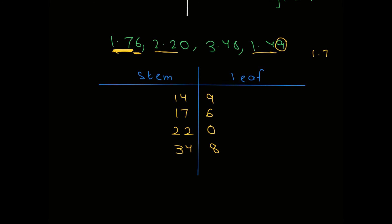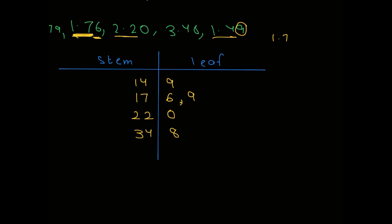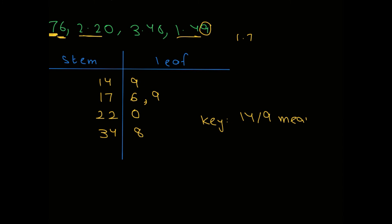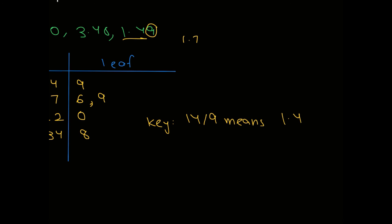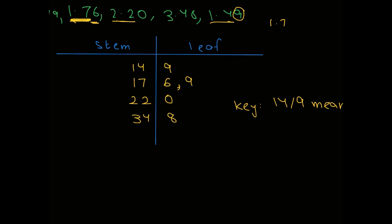If we also had 1.79, then alongside leaf 6 we would write 9 — so stem 17 would have leaves 6 and 9, representing 1.76 and 1.79. We then make a key indicating that 14|9 doesn't mean 149 but means 1.49, so that whoever reads the table knows how to interpret it correctly.